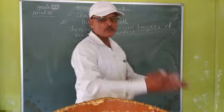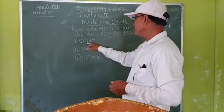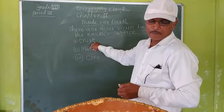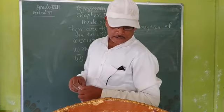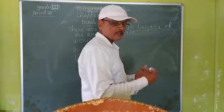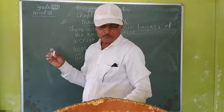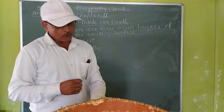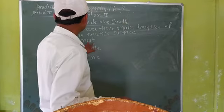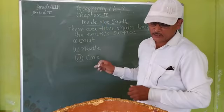Crust is the uppermost layer of the Earth's surface. It is also called the lithosphere. It is the thinnest and outermost rocky surface of the Earth. The solid crust is called the lithosphere.